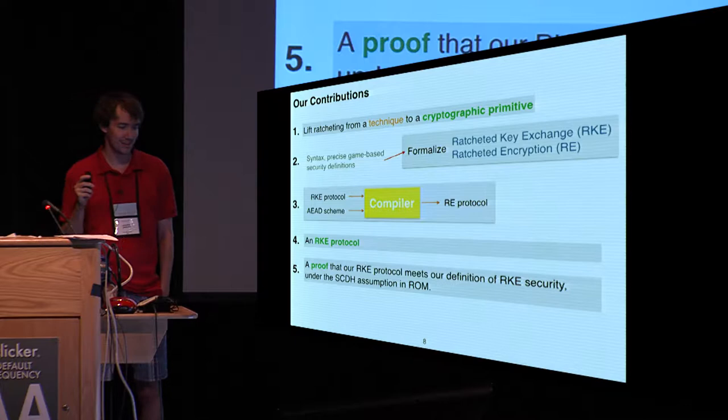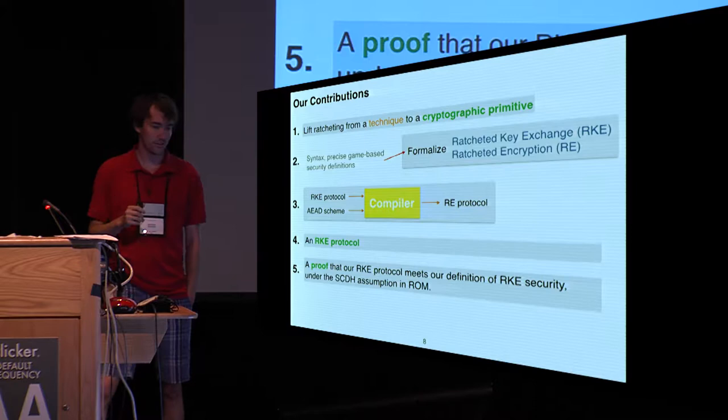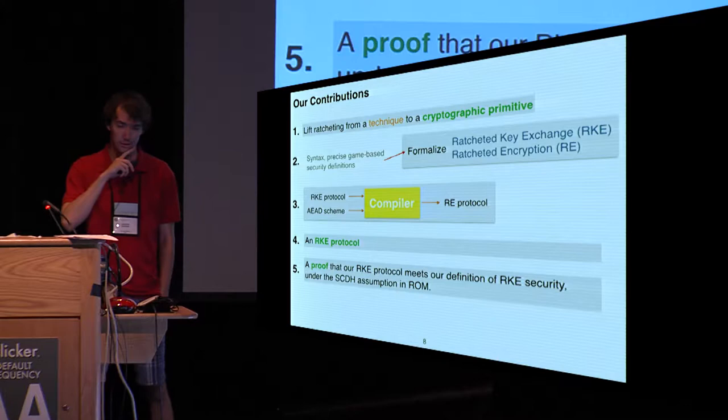And then, a protocol by itself isn't useful unless you're able to show that it's secure. So, we provide a proof that the ratcheted key exchange protocol we designed is secure, achieves our strong security notion under the strong computational Diffie-Hellman assumption in the random oracle model.